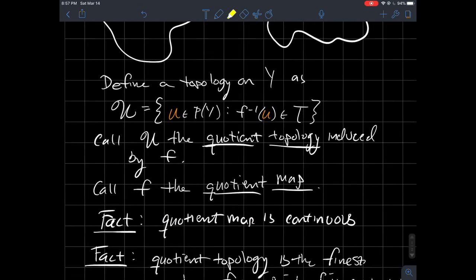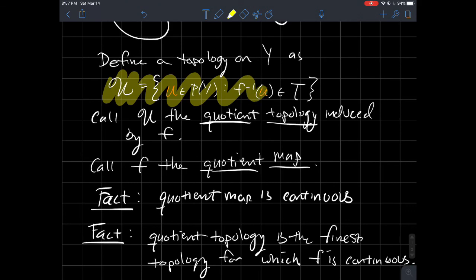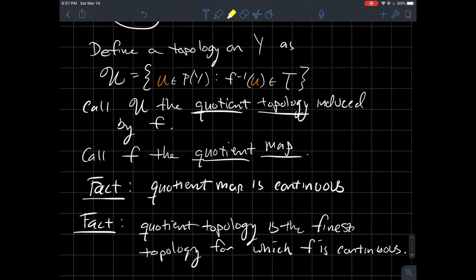In other words, these subsets here, that's the finest topology for which your function f is continuous.